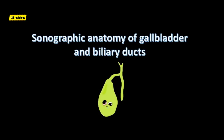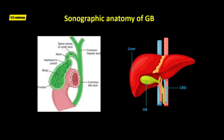Welcome to this lecture. We are going to discuss sonographic anatomy of the gallbladder and biliary ducts. The gallbladder is a saccular structure that has a pear or teardrop shape in cross-section. It is situated in the gallbladder fossa of the posterior right hepatic lobe, lateral to the second part of the duodenum and anterior to the right kidney.